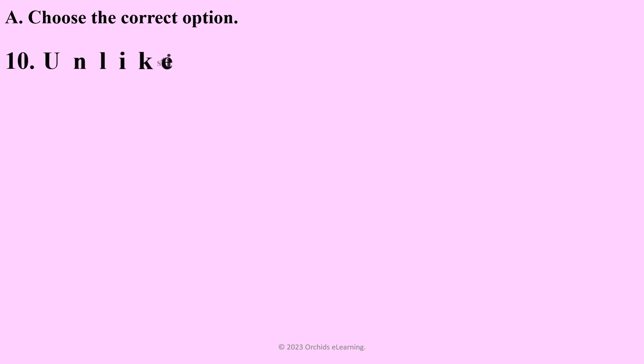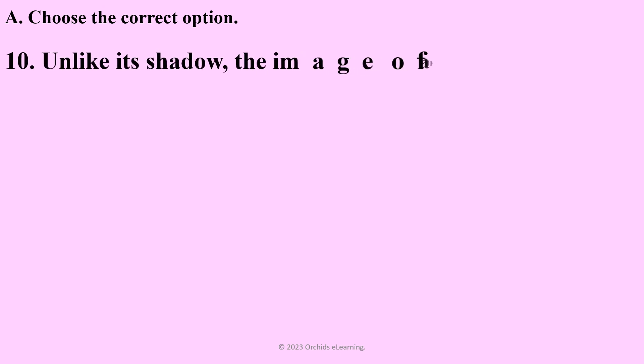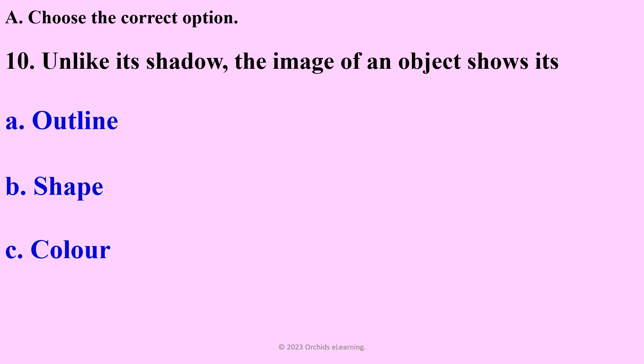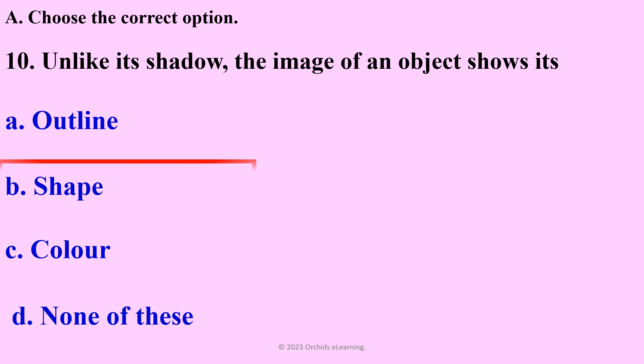Unlike its shadow, the image of an object shows its — answer: C/B — shape.